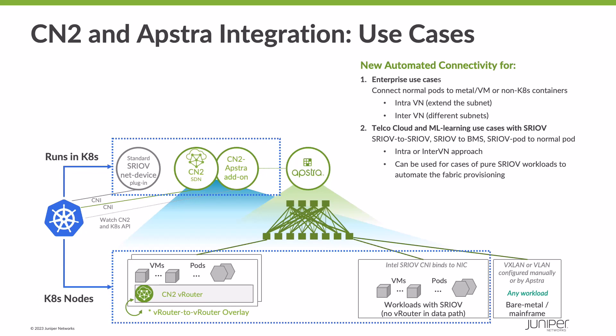SRIOV is a connectivity type that uses low latency and high throughput by bypassing any server-based networking, delivering packets from the workload — in this case the container inside the Kubernetes environment — directly to the network interface card. This technology is used often in Telco Cloud for containerized and virtual network functions needing such performance benefits. It's also used in enterprise environments for training machine learning models with technologies like RDMA over Ethernet. In these environments, the SRIOV standard network device plugin is responsible for binding the container to the network interface card's interface.